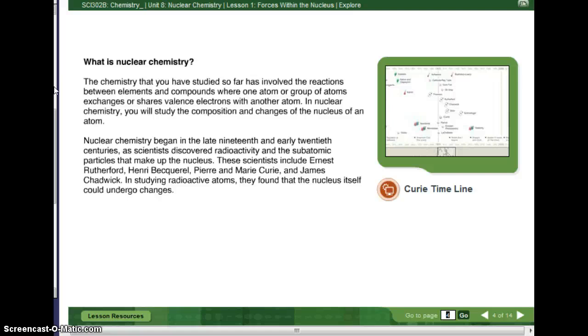Nuclear chemistry began in the late 19th and early 20th centuries as scientists discovered radioactivity and the subatomic particles that make up the nucleus. These scientists include Ernest Rutherford, Henry Becquerel, yeah, I can't say his name. Honestly, off the top of my head, I can't even tell you what he did. Pierre and Marie Curie, and James Chadwick.